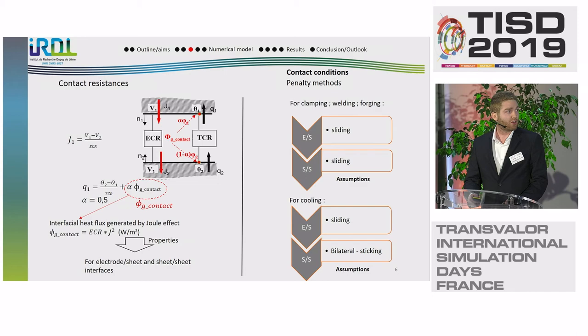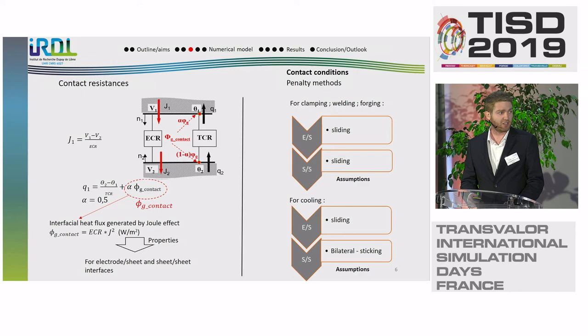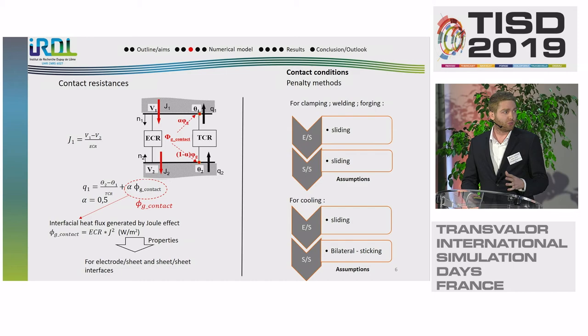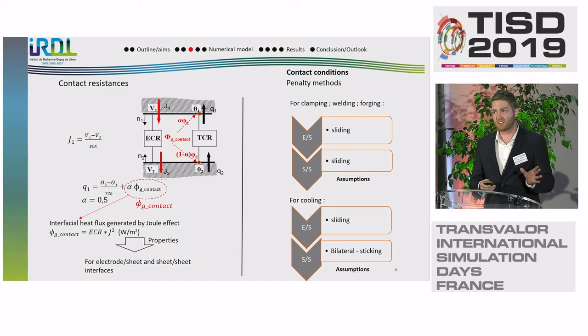Mechanical contacts are solved in Forge through the penalty method and simplified contact conditions. In this model, every contact is considered sliding, except in the cooling stage. For the steel sheet-sheet contact, which is bilateral sticking, it is needed to change in this step, because if we do not do that, they will follow the electrode when there is a separation, since in the real case the three sheets share a common area, but it is not the case in the simulation.